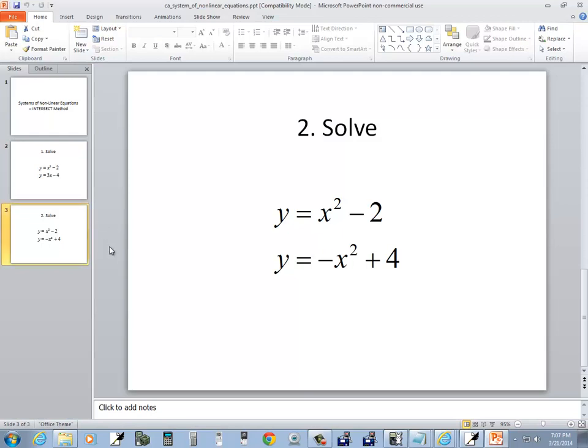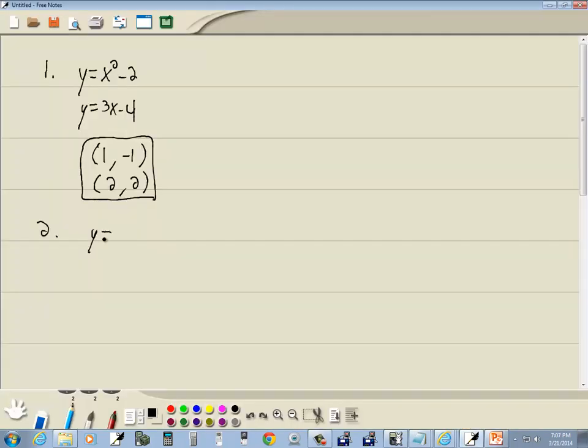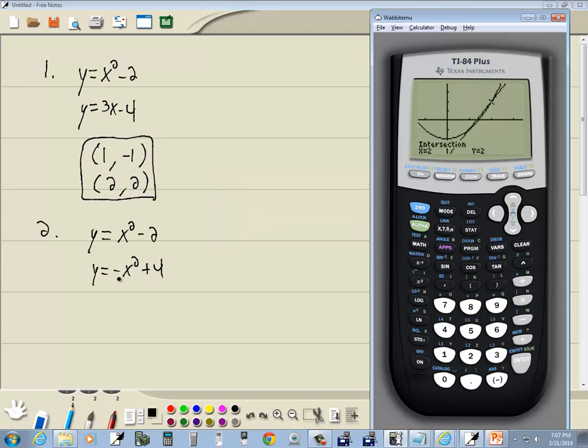Let's look at another example. This one's going to show a flaw with it, I think. y is equal to x squared minus 2, and y is equal to negative x squared plus 4. Notice that y's are by themselves, so this is perfect for the calculator. Now I'm going to do a zoom and choose 6 for z standard and set back to my standard viewing window.